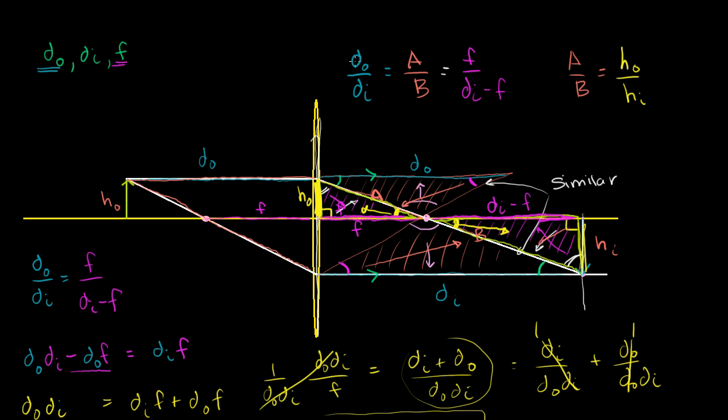We know that, from the last video, the distance of the object to the distance of the image is the same thing as a to b. So this is going to be the same thing as this. So the ratio of the distances is also the same thing as the ratio of their heights. So let me write it this way. So the ratio of the distance from the object to the lens to the distance from the image to the lens is the same as the ratio of the height of the object to the height of an image, or to the image of that object.